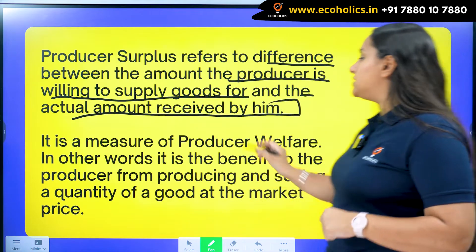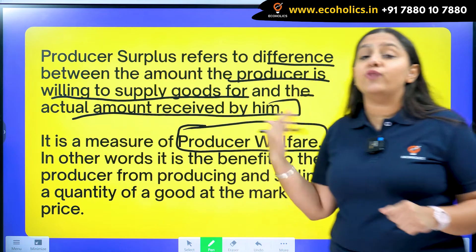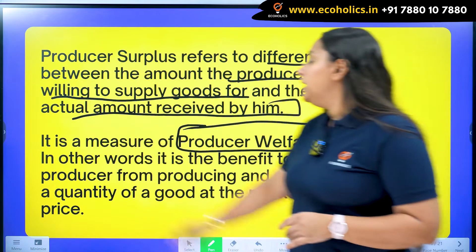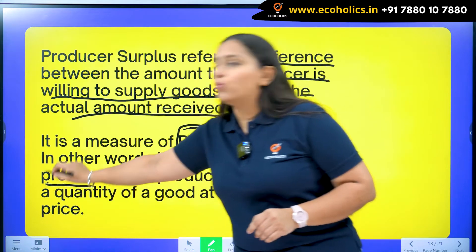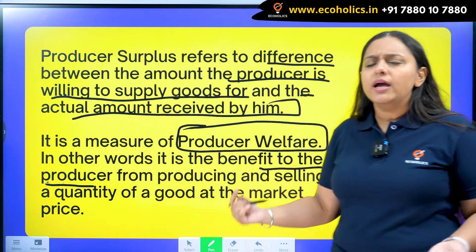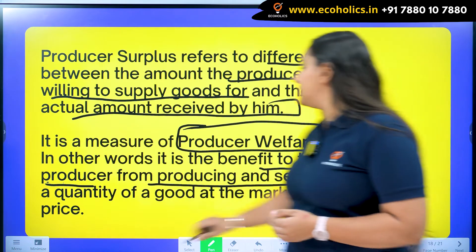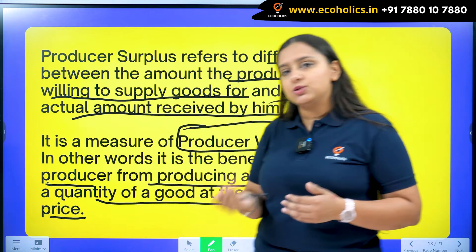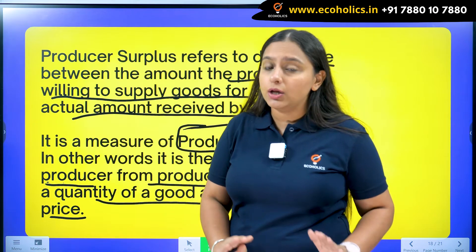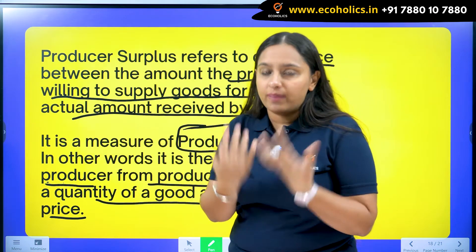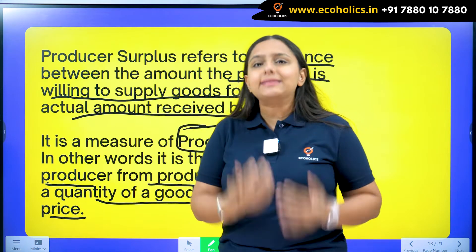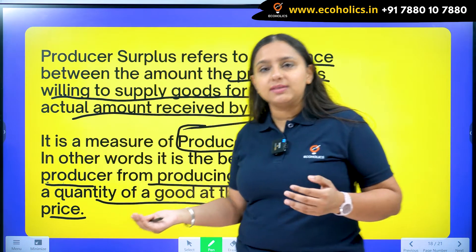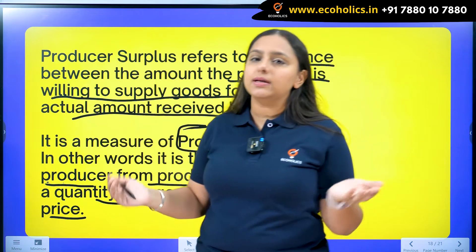Producer surplus is a measure of producer welfare — whenever I want to calculate the welfare of producers, producer surplus gives me the exact amount. In other words, it is the benefit to the producer from producing and selling a quantity of good at the market price. Producers always want to maximize their producer surplus, just as consumers want to maximize their welfare.